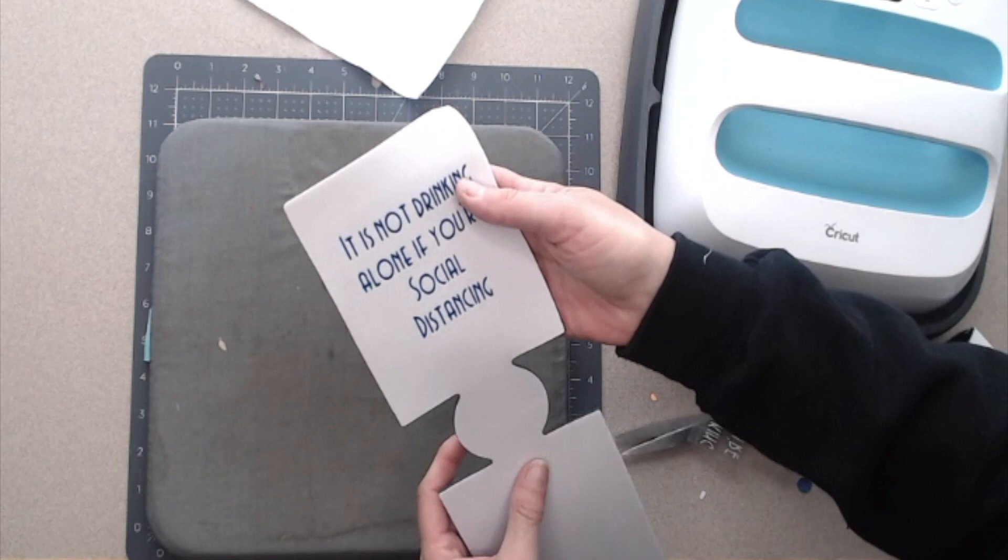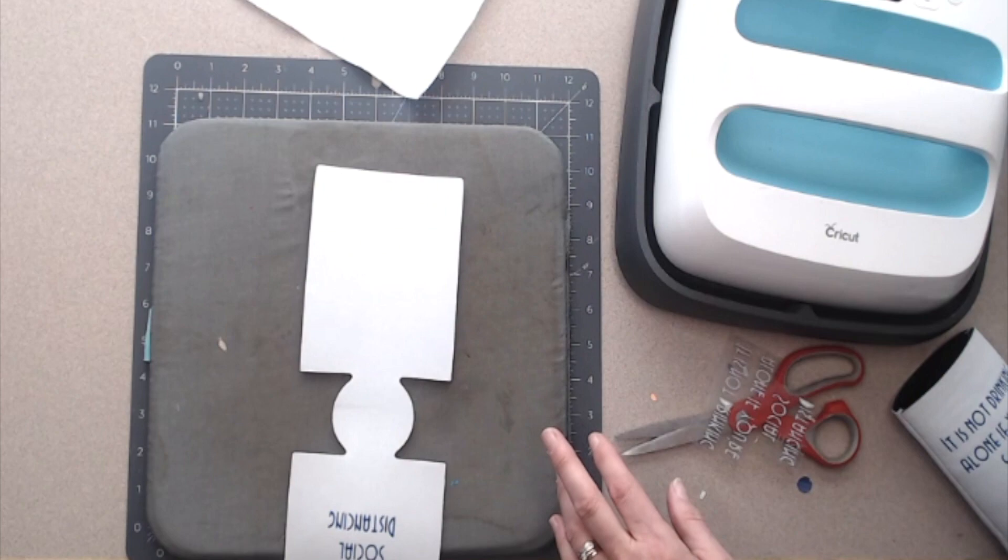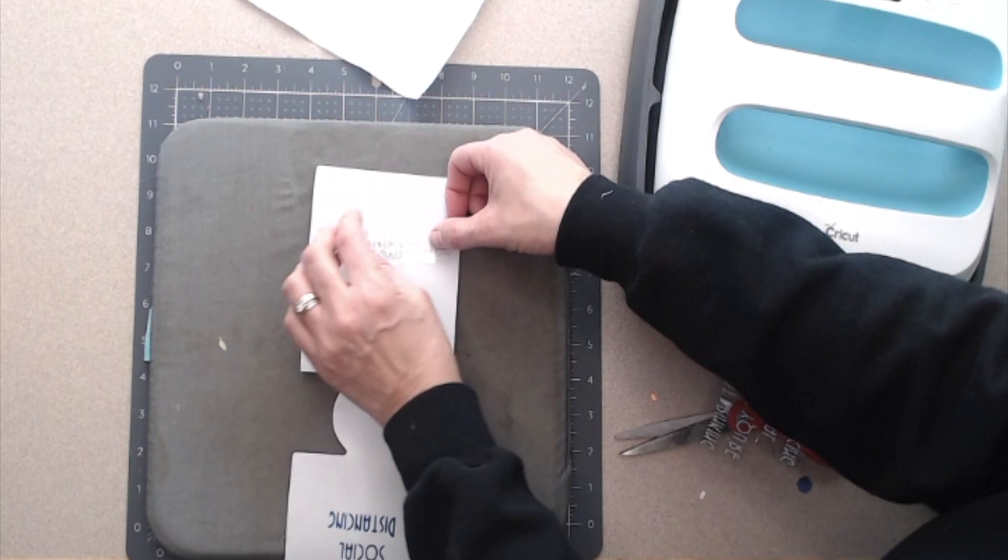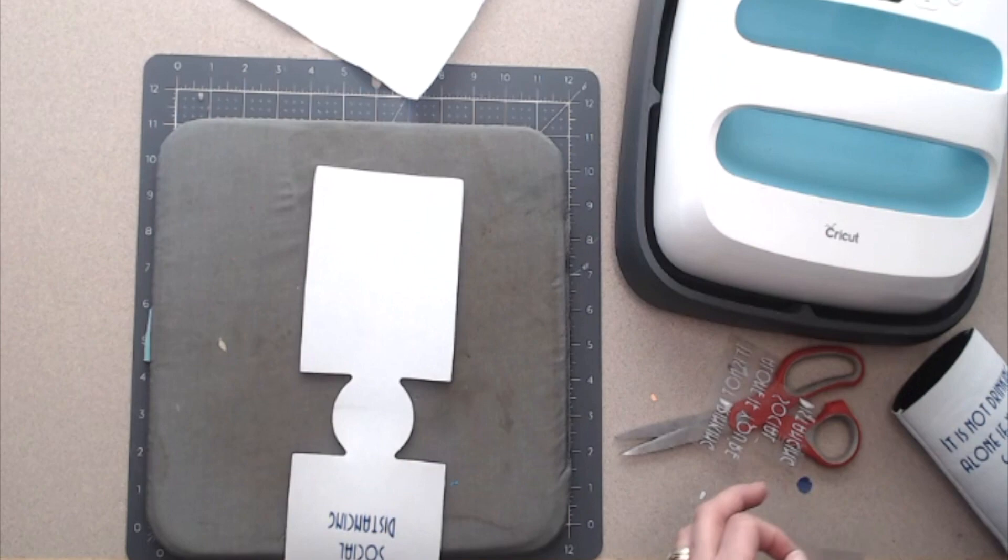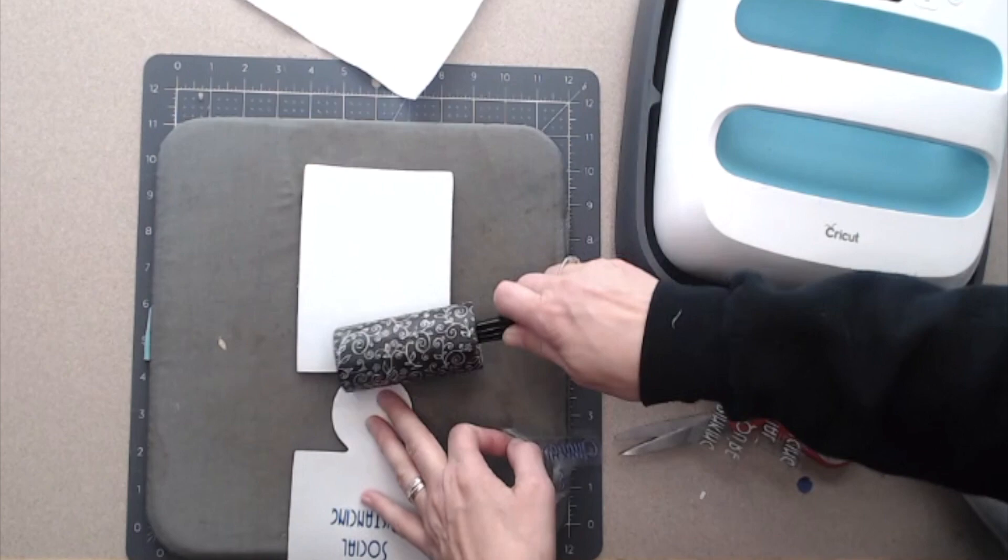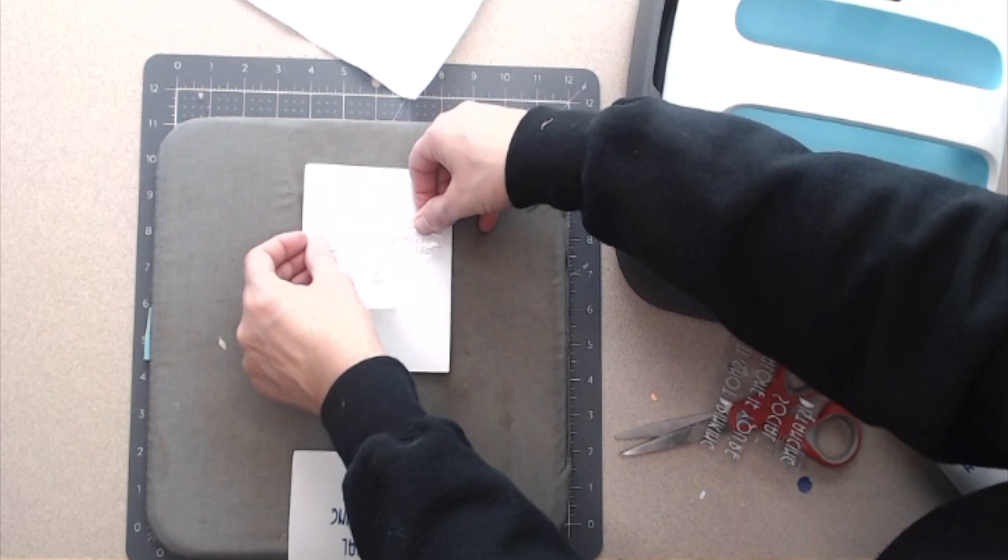Now let's go ahead and flip it over and let's do our second one. Same steps. Whoops, same steps. Did you notice I missed a step? I did not do my lint brush up there. So I'm going to go ahead and put that on, put my butcher paper on, and I'm going to do it again.